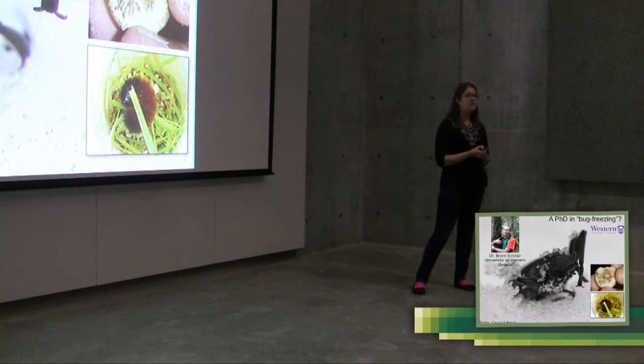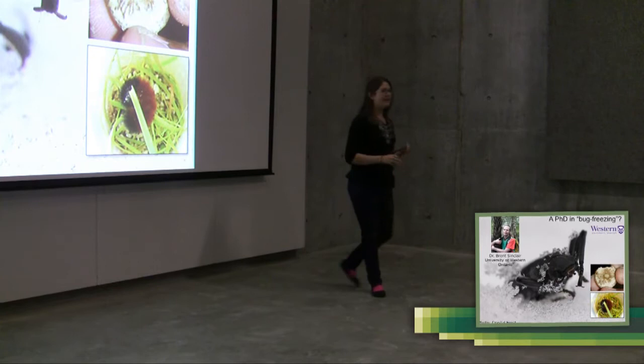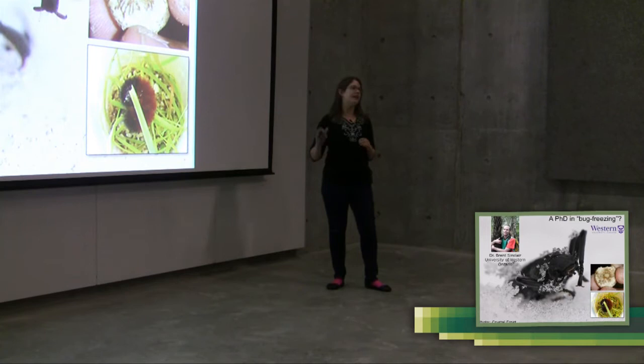And this one, the woolly bear caterpillar, Pyrrharctia isabella. This is the one, if you've ever heard the legend that the size of the orange stripe tells you how cold that winter is going to be. That is a complete urban legend. But there are lots and lots of cool bits about the biology of the species. If you've got some time, look it up. It's really neat.